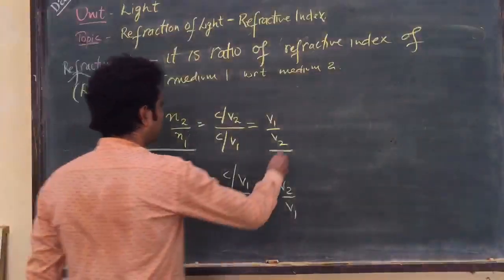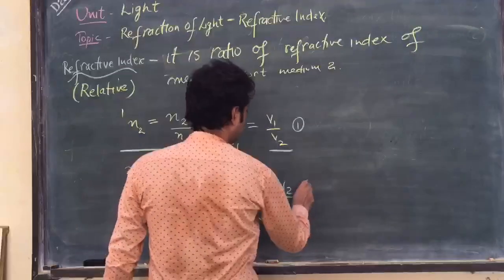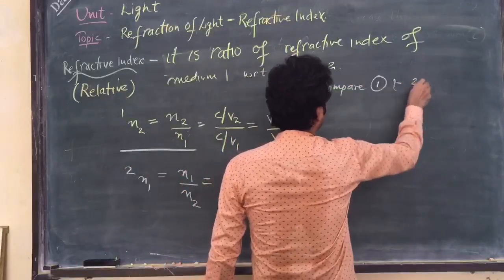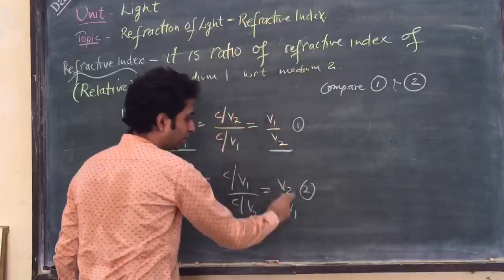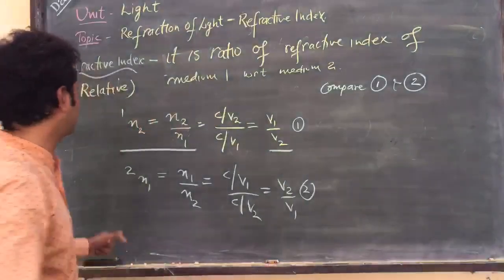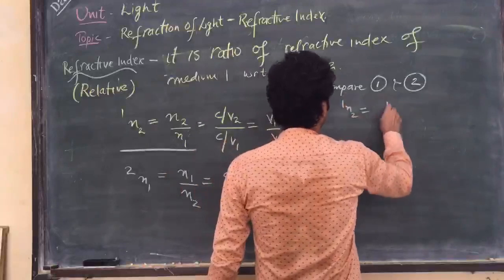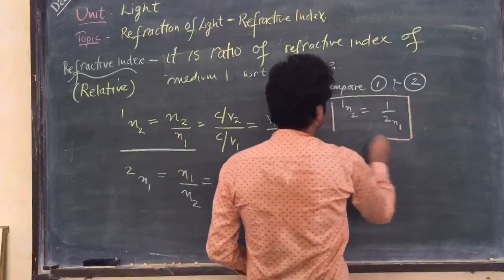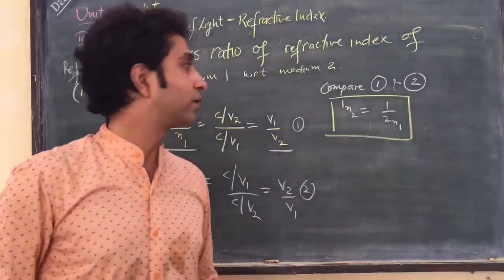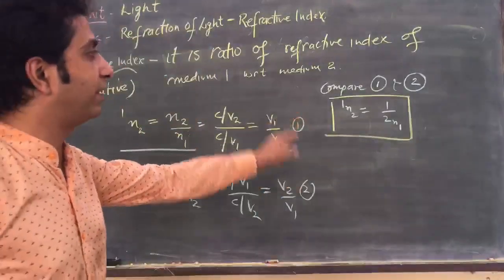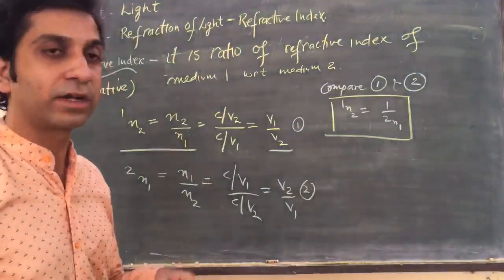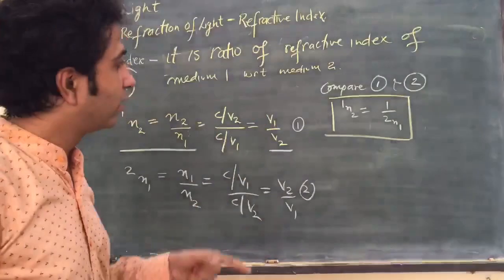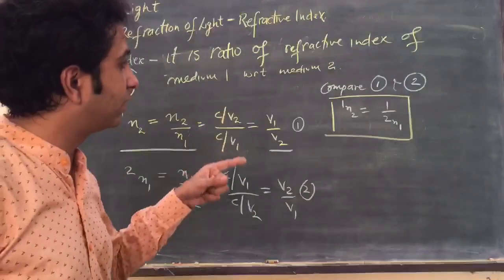Comparing the two equations, since the ratios are reversed, we can say that ₁n₂ is equal to 1 divided by ₂n₁. This is one of the important relations we obtain — the refractive index of medium two with respect to one is the reciprocal of the refractive index of medium one with respect to two.